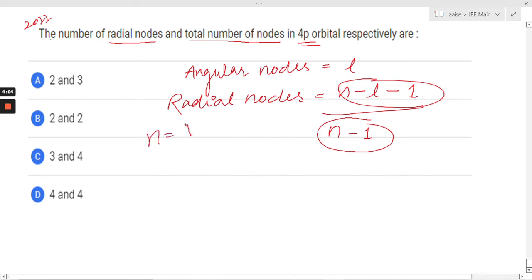Here, the value of n equals 4. The value of L equals... 2? No, it's not 2, it is 1. Because for S orbital, L is 0; for P orbital, it is 1; for D orbital, it is 2; and for F orbital, it is 3.